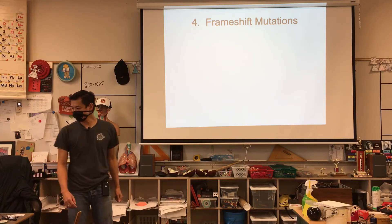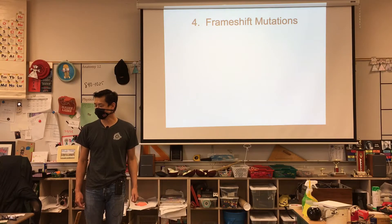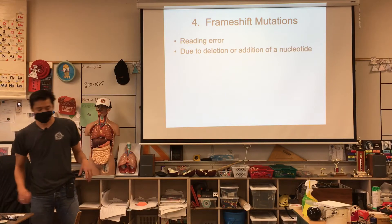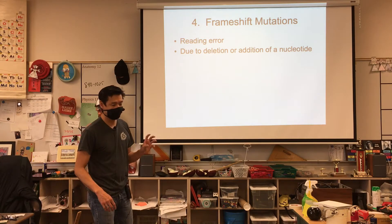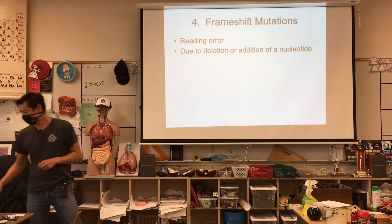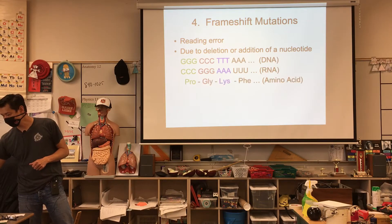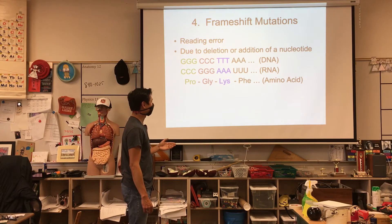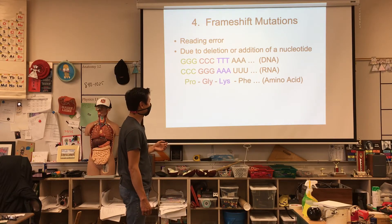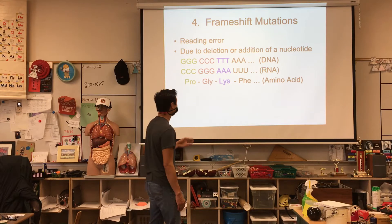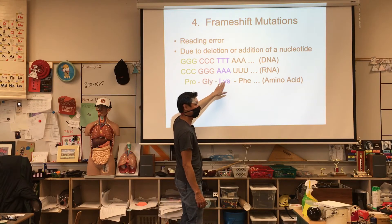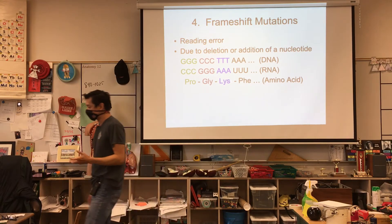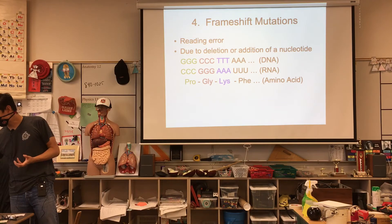The fourth and last type of point mutation is a frameshift mutation, which is a reading error. This occurs when there's an insertion or deletion of a single DNA nucleotide. Here's our example: GGG CCC TTT AAA, and the mRNA transcript produced by RNA polymerase would be CCC GGG AAA UUU, giving us proline, glycine, lysine, and phenylalanine.